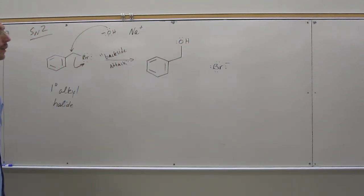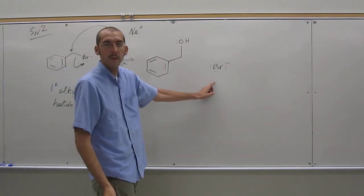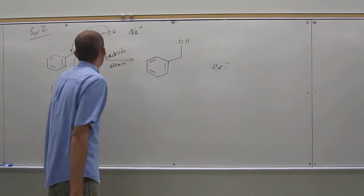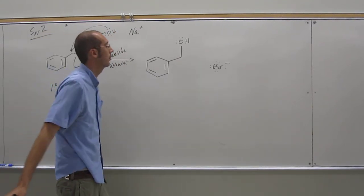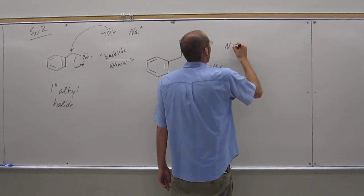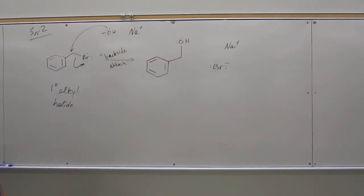We're going to get the Br minus as the leaving group, good leaving group. It's another reason, that's the third reason, Br minus a good leaving group. And of course, Na plus is going to want to associate with that because it's in an organic solvent.